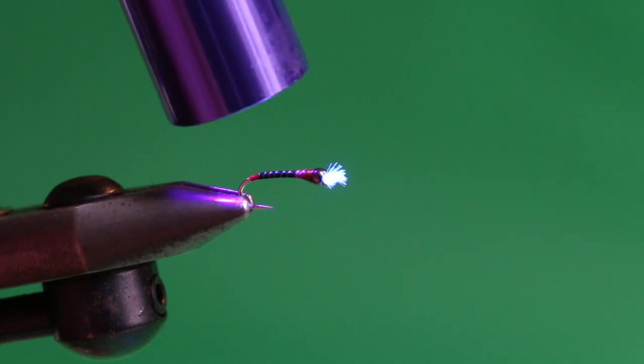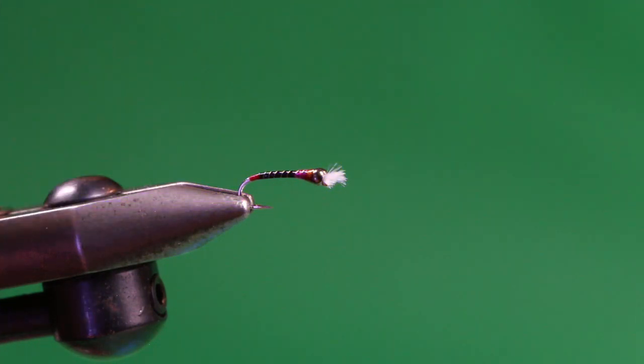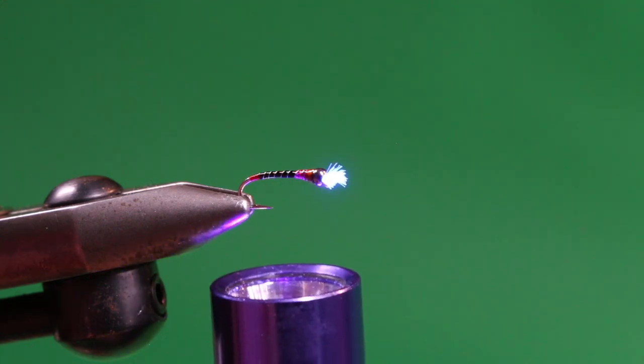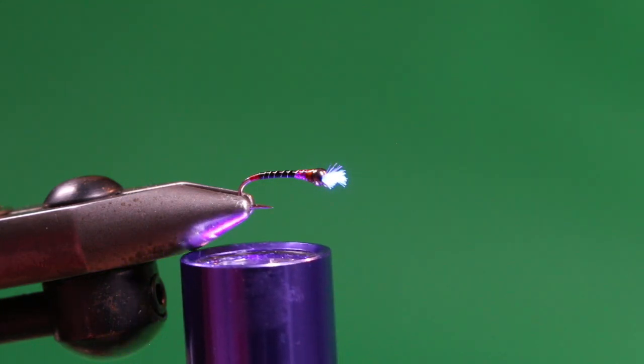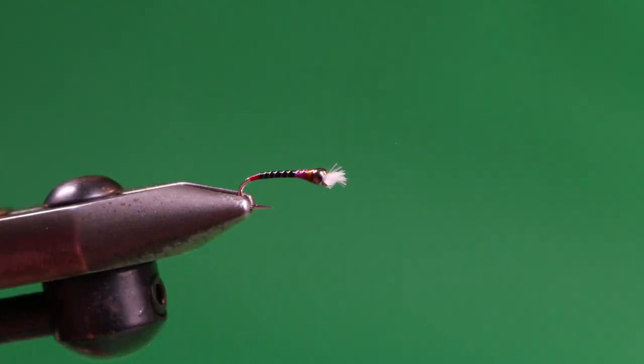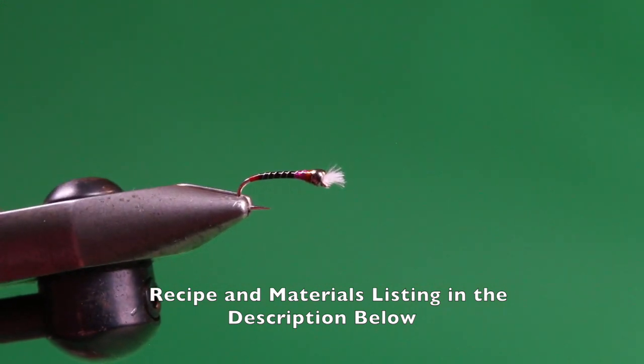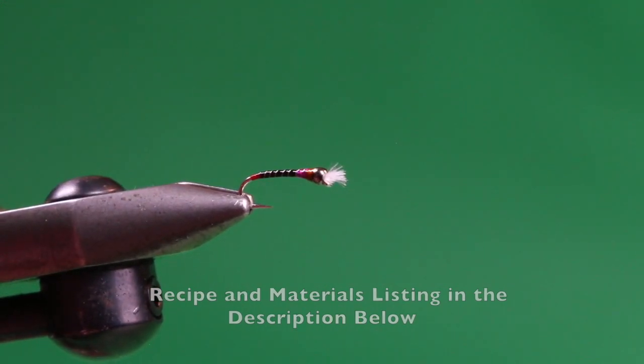And then once we're happy with that, we're going to come in with our curing light and just zap that. And you can sort of see how those gills fluoresce as well. Again, that's why I like the Uni-Floss. So we're just going to make sure. I'm going to come up underneath. Don't look into the light, obviously. Not good for you. But there you have it. The completed Western Wufta. Simple, easy to tie, and deadly on stillwater trout.